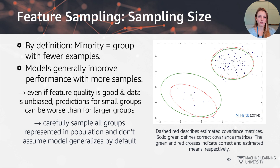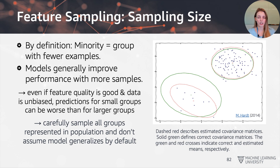Another thing to consider when sampling is the sample size itself. By definition, a minority is a group with fewer examples, and machine learning models generally improve their performance the more examples they see. So if you have two different populations and one has a very large number of samples, the model will likely perform better for that group and worse for the minority group. Carefully sample all groups — techniques such as up-sampling the minority group or down-sampling the majority group can help balance the dataset. There are also methods you can use directly during model training by letting the model know the different group ratios, which can also help mitigate some of the bias.